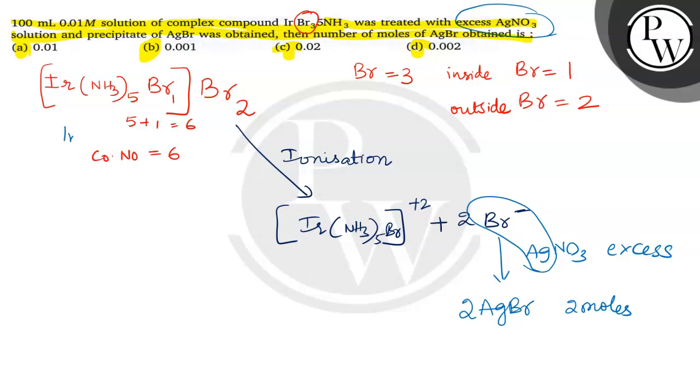Now see here, 1 mol of this complex giving 2 moles of AgBr, but in the question how many moles are given? Molarity formula is number of moles by volume in liters. Number of moles is equal to molarity into volume in liters. If volume is in milliliters then molarity into volume by thousand. Now molarity value given 0.01, volume is given 100 divided by thousand. On solving we get this as 10⁻³ moles.